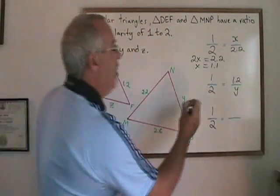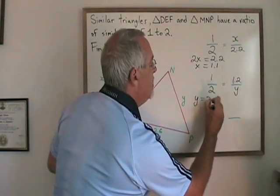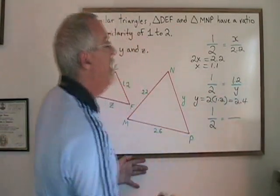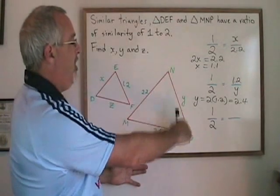Then when I cross multiply, I get Y equals 2 times 1.2, which is going to be equal to 2.4. The side length of side Y is 2.4.